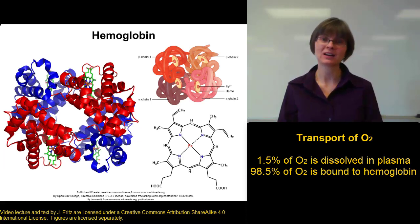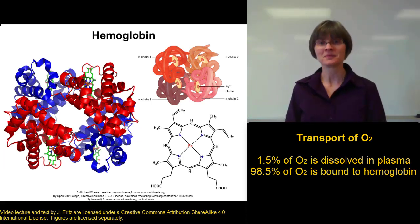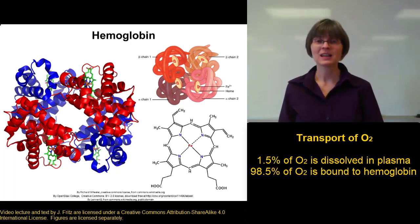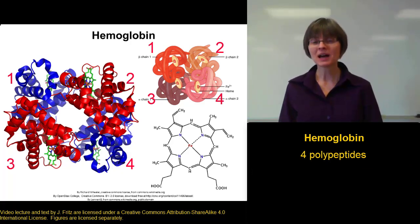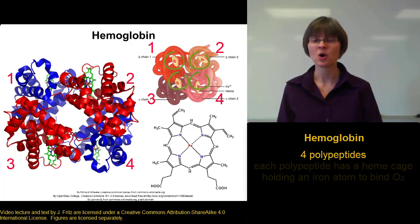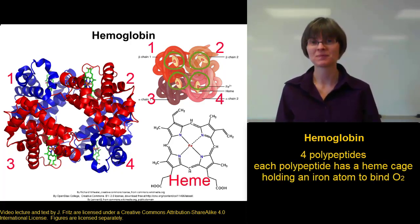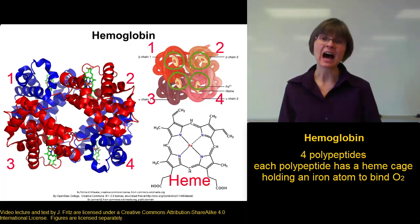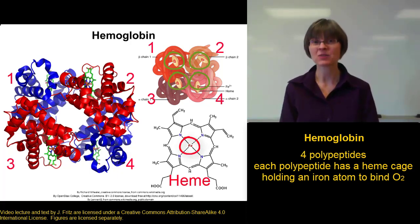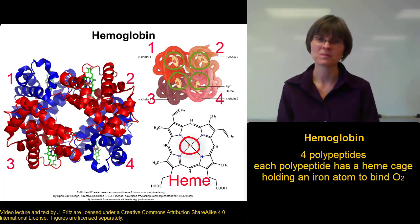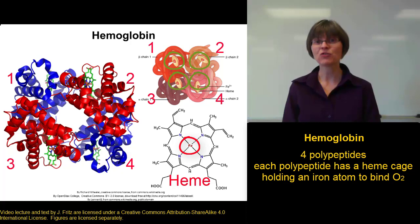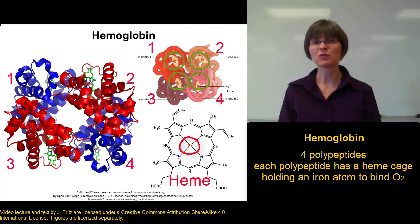We talked about hemoglobin back in our very first unit on the circulatory system. Hemoglobin is made up of four polypeptides — four strings of amino acids that all have to work together. Each polypeptide holds one heme group, or one cage made of carbon and nitrogens. Each heme group has an iron atom in the middle, and it's that iron atom that really does the work — the iron atom binds to oxygen. Each iron atom can bind to one molecule of O2. Since each hemoglobin has four polypeptides and four heme groups, each hemoglobin molecule can carry up to four oxygens.